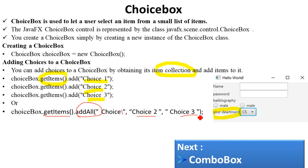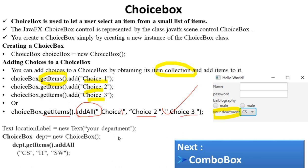To add the ChooseBox into the scene graph, we will do a practical implementation. We will apply a grid panel layout and add the ChooseBox component to the grid.